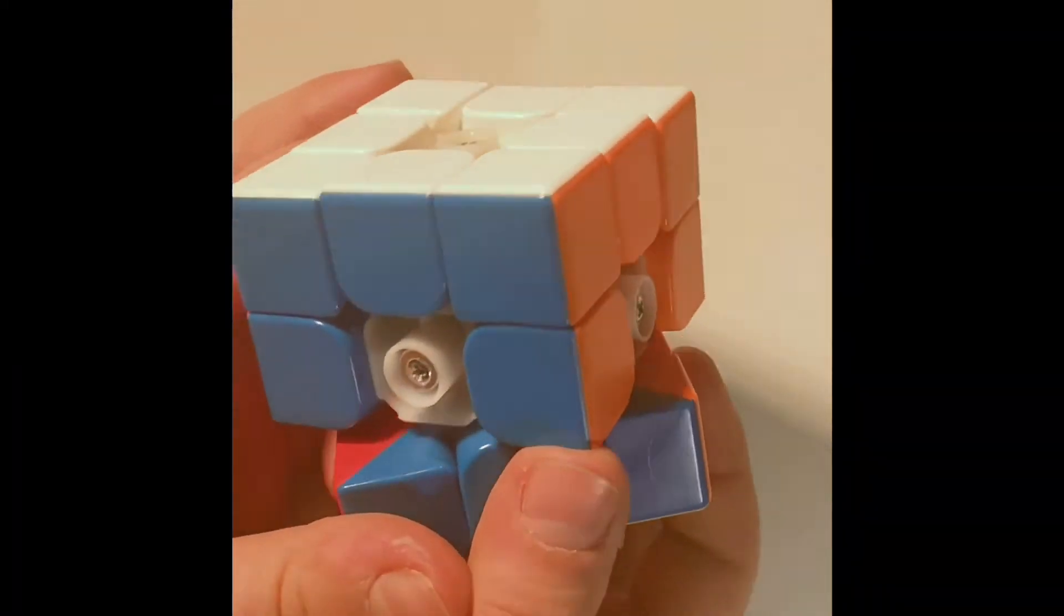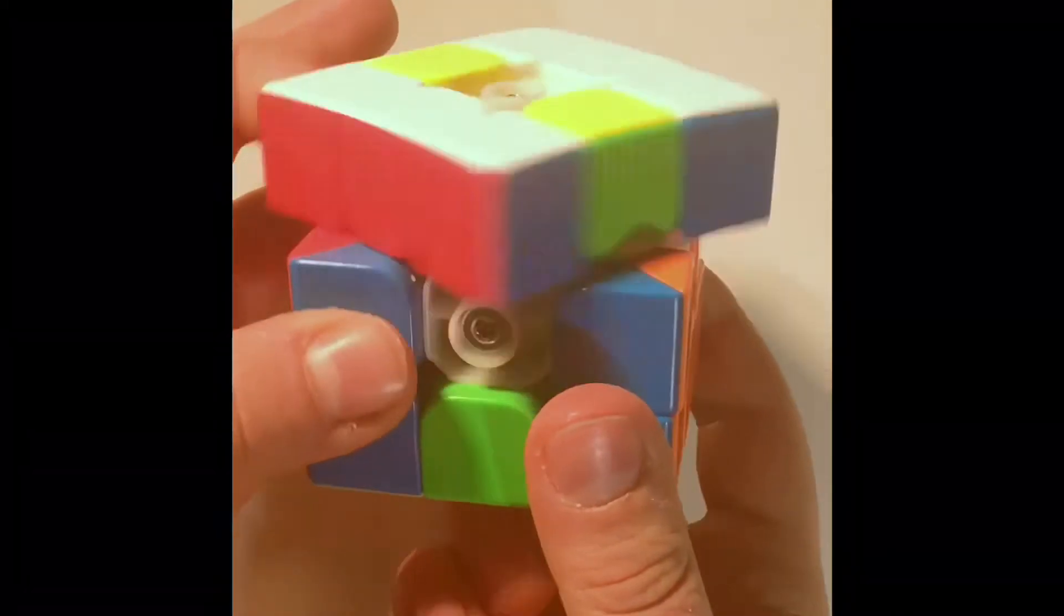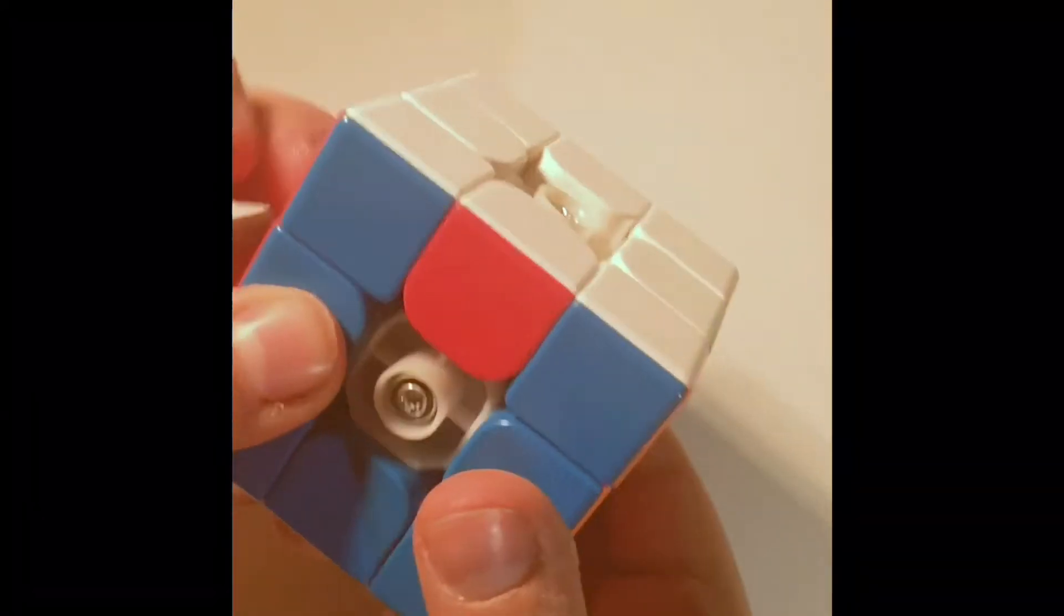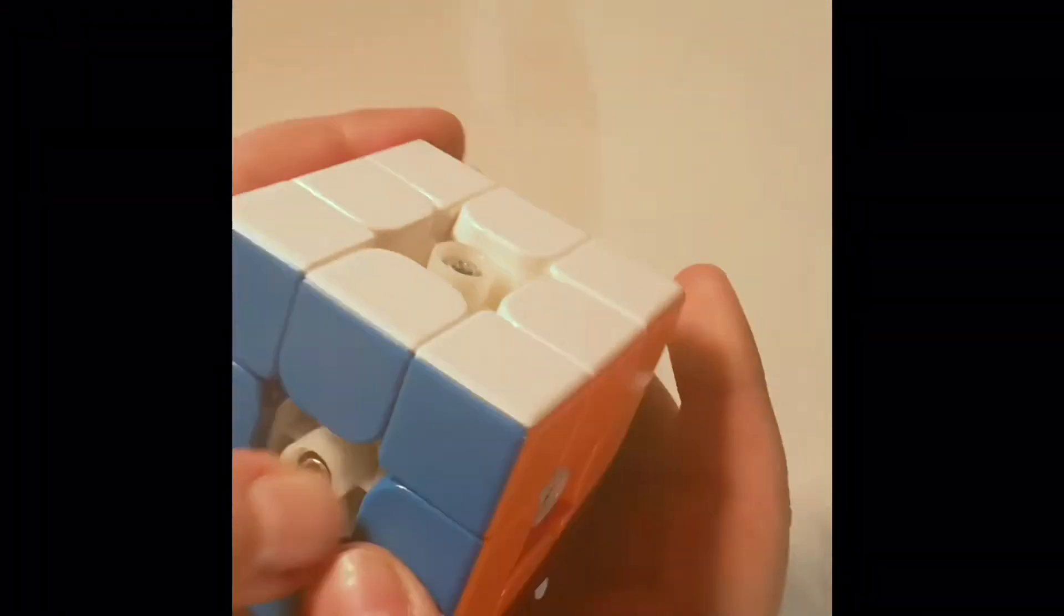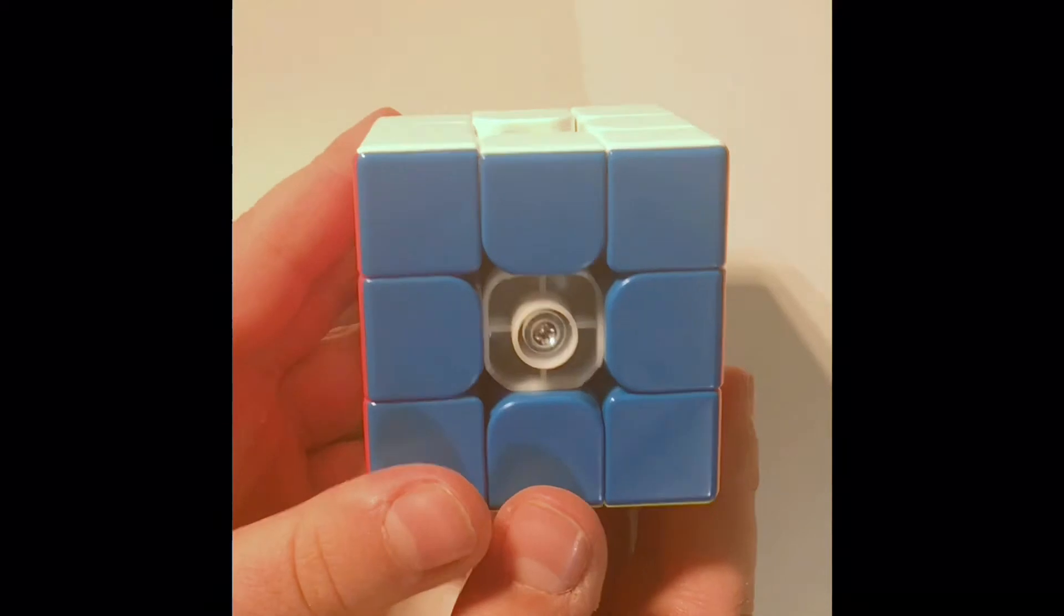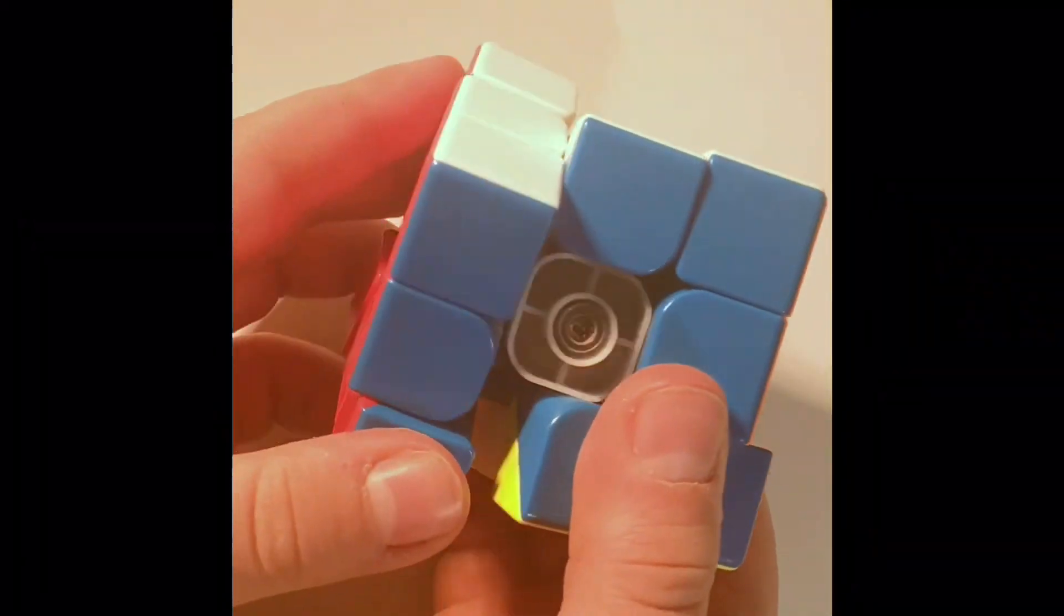So literally now that I pulled the center caps off, we have a completely functional void cube and it has void cube parity and everything. It actually turns well and corner cuts well. Now the performance may be a bit hindered, but this still corner cuts super well considering what a normal void cube corner cuts.